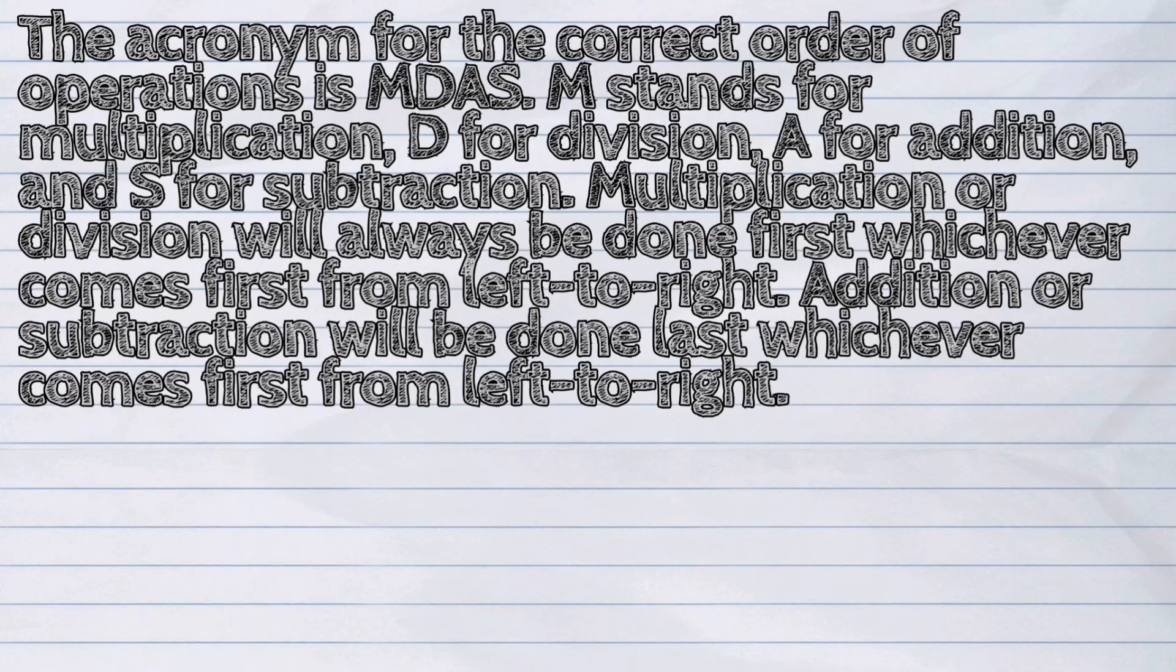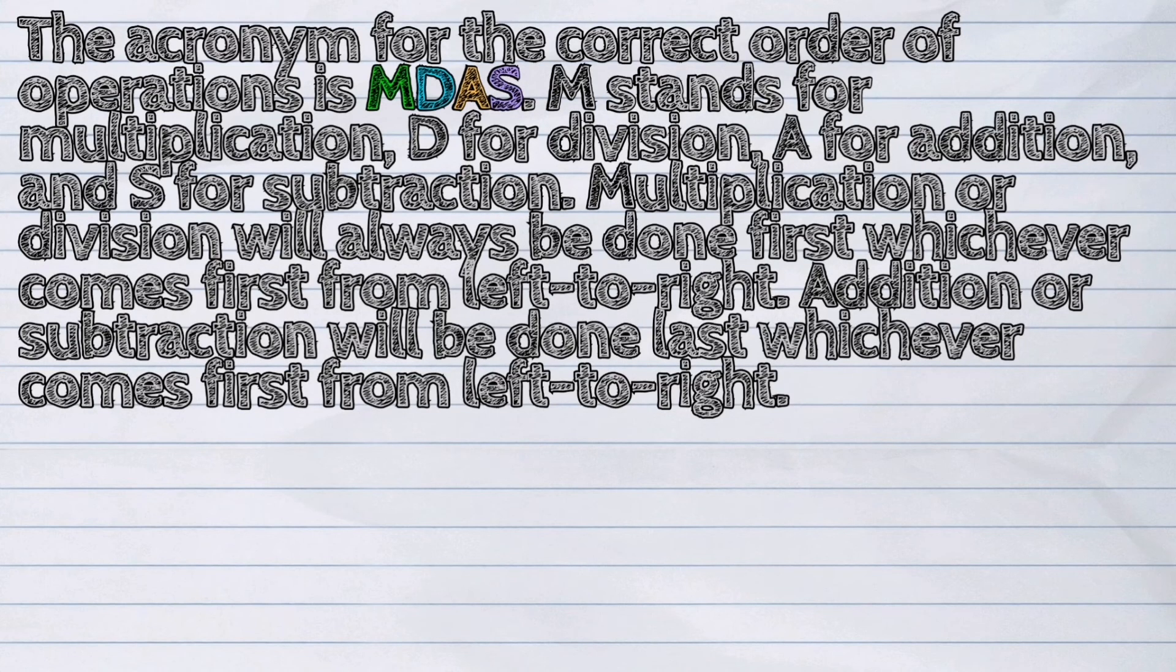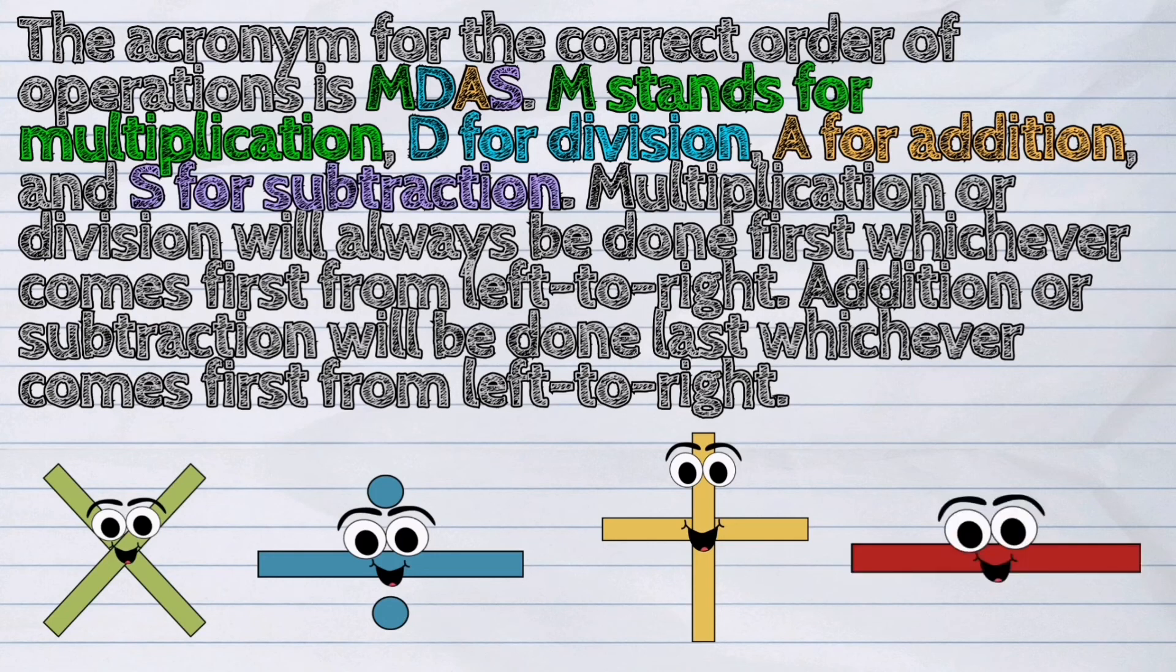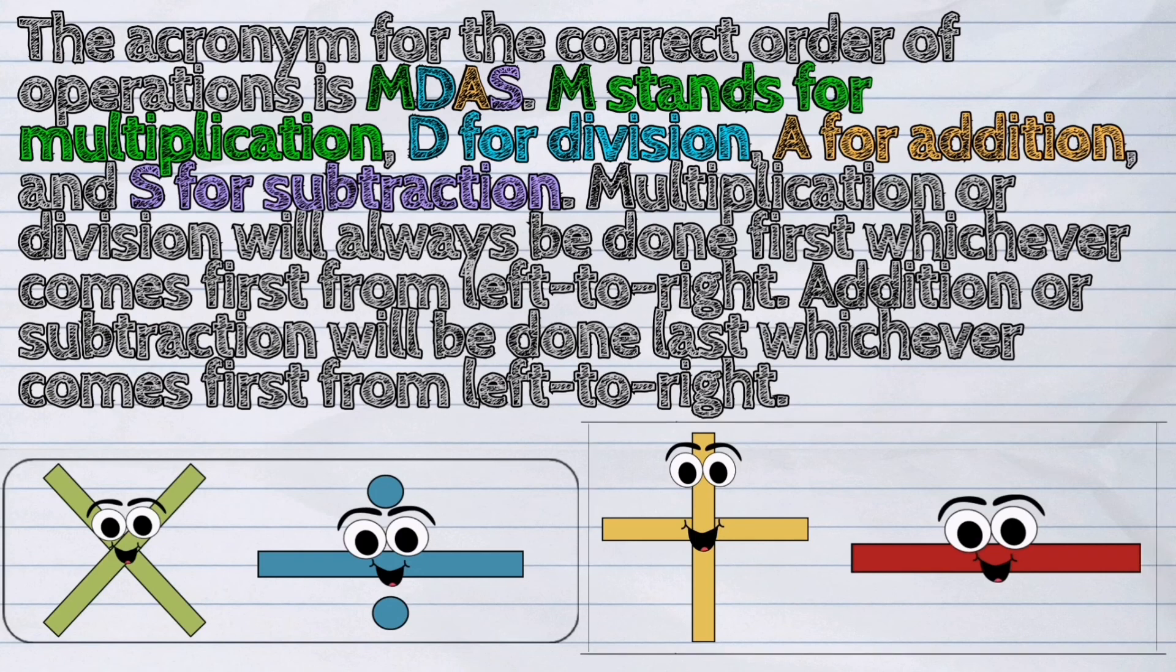The acronym for the correct order of operations is MDAS. M stands for multiplication, D for division, A for addition, and S for subtraction. Multiplication or division will always be done first, whichever comes first from left to right. Addition or subtraction will be done last, whichever comes first from left to right.